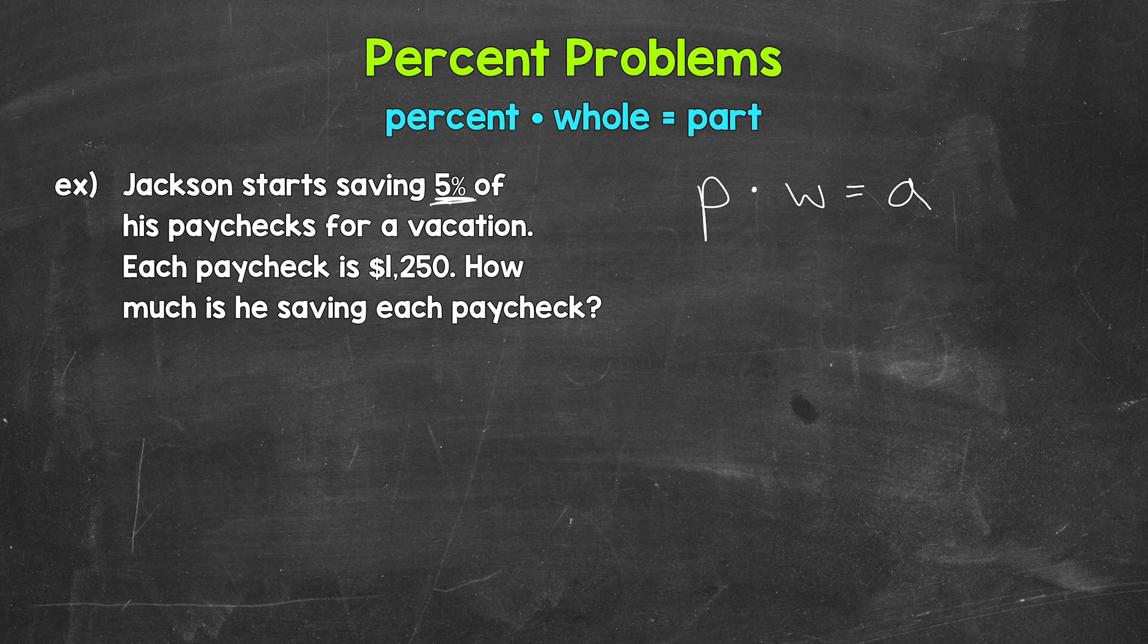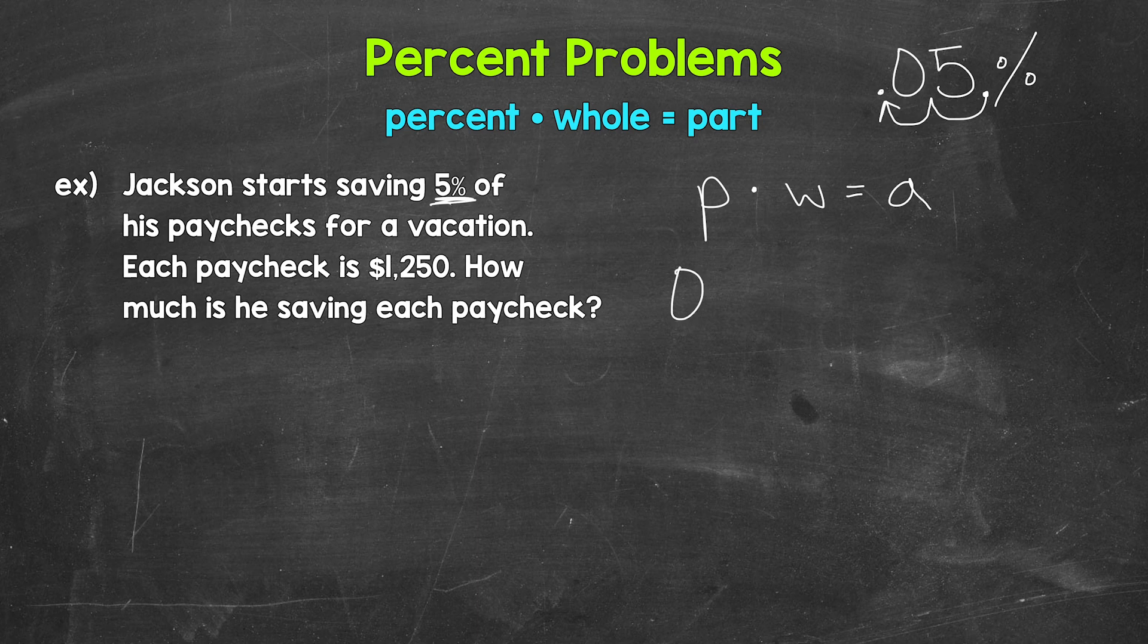And remember, all we need to do to convert a percent to a decimal is divide by 100. We can quickly divide by 100 by moving the decimal twice to the left. The decimal comes after a whole number. So for 5%, the decimal goes right here. And we move it once, twice to the left. We need to fill this gap with a zero. So we get 0.05, five hundredths. So let's plug that in.